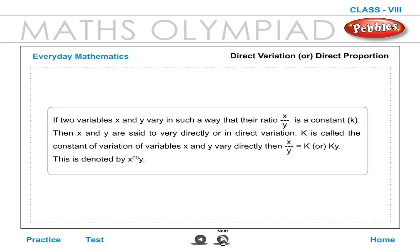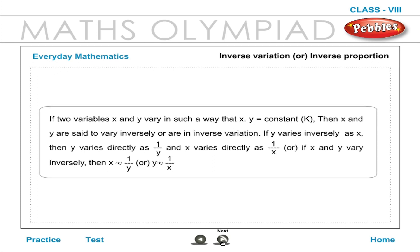Direct Variation or Direct Proportion: If two variables X and Y vary in such a way that their ratio X by Y is a constant K, then X and Y are said to vary directly or in direct variation. K is called the constant of variation. If variables X and Y vary directly, then X by Y is equal to K, or X equals KY. This is denoted by X is proportional to Y.